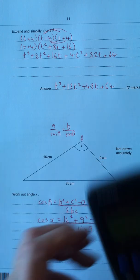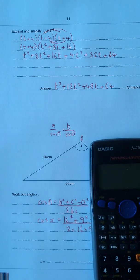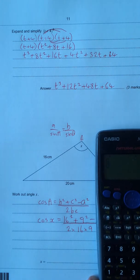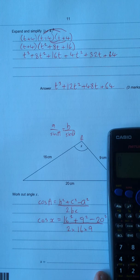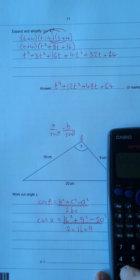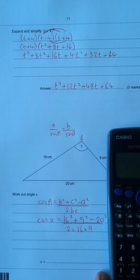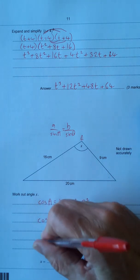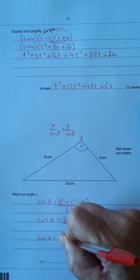Let's stick that into a calculator. I like to use the fraction button. Put in 16, press the x squared button, plus 9 x squared, subtract 20 x squared. Use the replay button to go to the denominator: 2 times 16 times 9. That gives us negative 7 over 32. So we've got cos x equals negative 7 over 32.